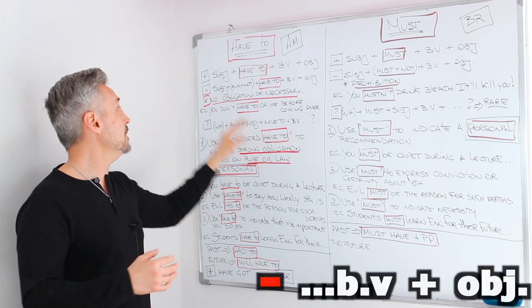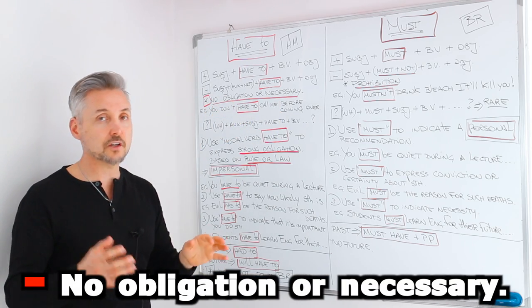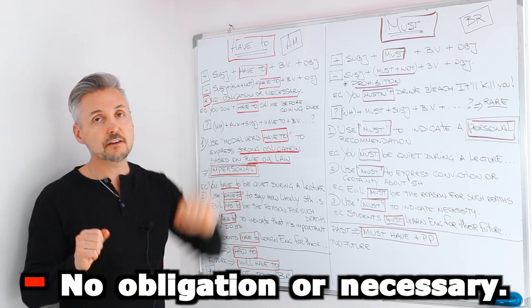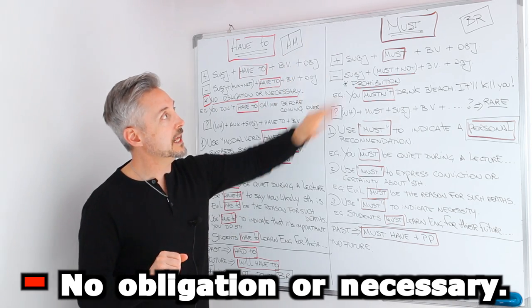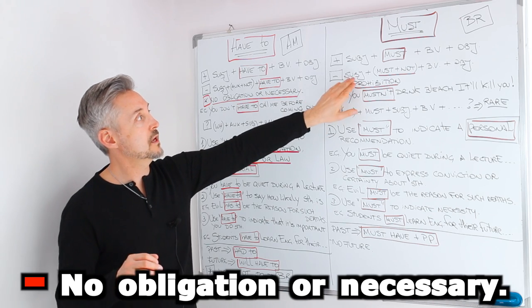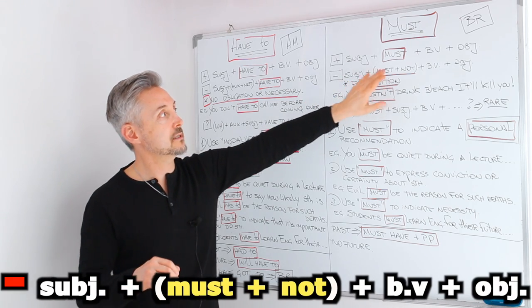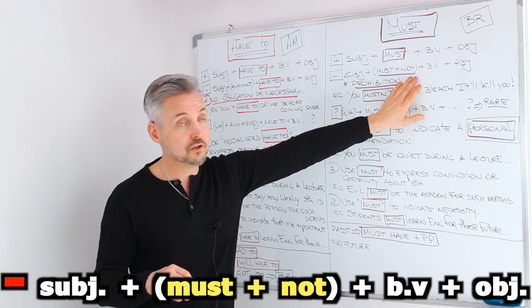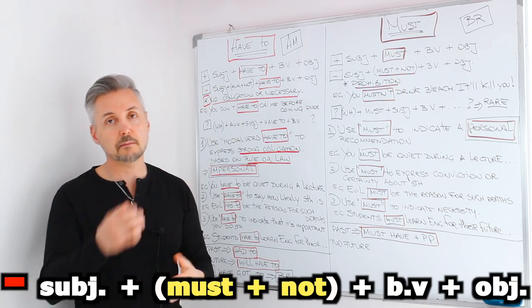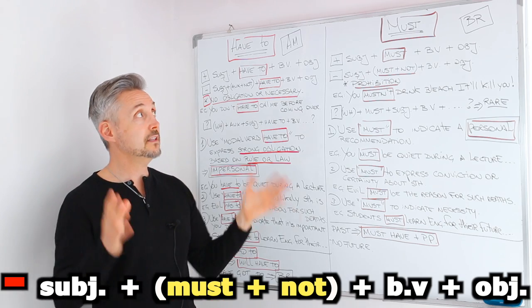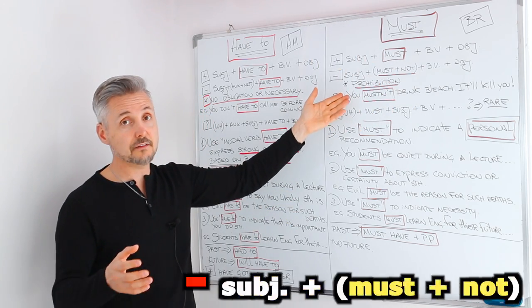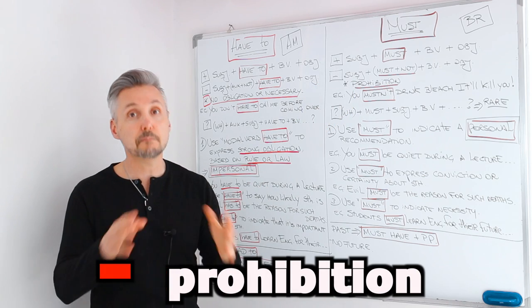If you use have to in a negative sentence, it means no obligation or necessity. Instead, if you use must in a negative sentence, the formula would be: subject plus must, plus not, plus the base of the verb, plus the object, and then the time expression, if any. In this case, it means prohibition.